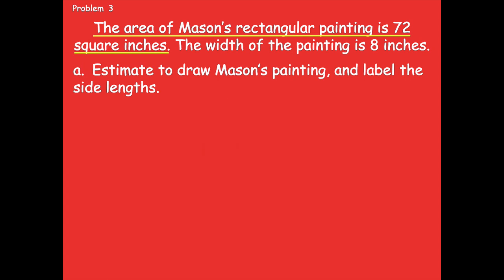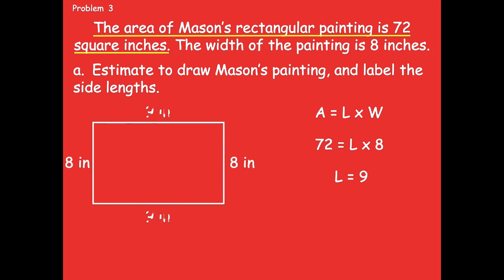All right, friends, pause if you need more time. We know that area equals length times width. If I plug my numbers in from this problem: Mason's rectangular painting is 72 square inches, so I replace area with 72. My length is unknown, but I do know the width is eight inches. My problem is 72 equals length times eight. I can skip count by eights until I get to 72, or do 72 divided by eight. That tells me my length is nine. Now I can draw my rectangle — the width is eight inches and the length is nine inches.